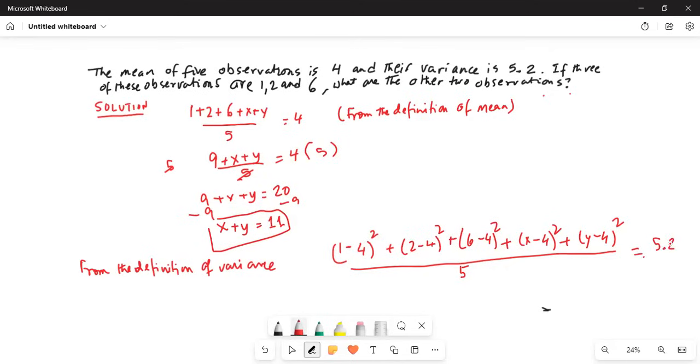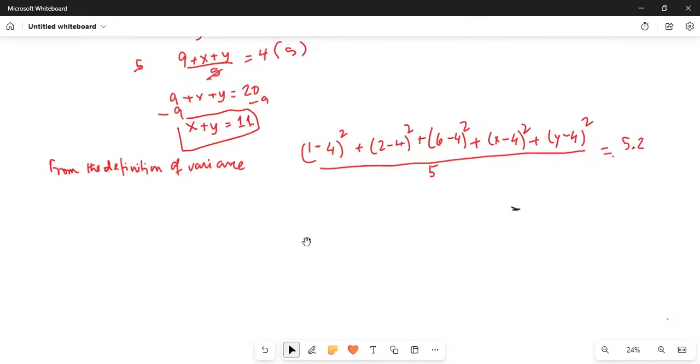Now we multiply by 5 on both sides. So 5 on both sides if we do, 5 in the denominator on the left hand side will cancel and 5 multiplied with 5.2 on the right hand side, 5 times 5.2 is 26. So (1 minus 4) is minus 3 squared plus minus 2 squared plus 2 squared and plus (x minus 4) squared plus (y minus 4) squared is equal to 26.